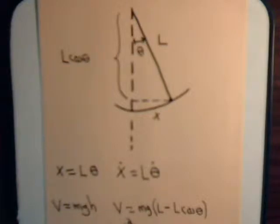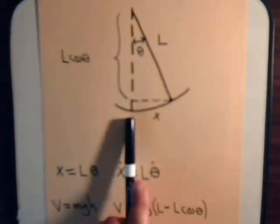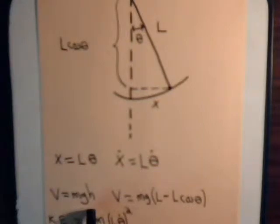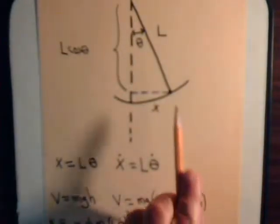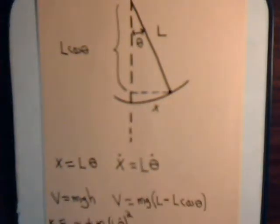When the pendulum reaches its bottommost point, the potential energy is zero at that point. The potential energy of the system is the typical formula MGH, where H is how high the pendulum is above that zero reference point.